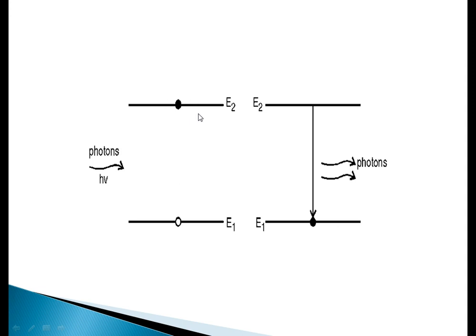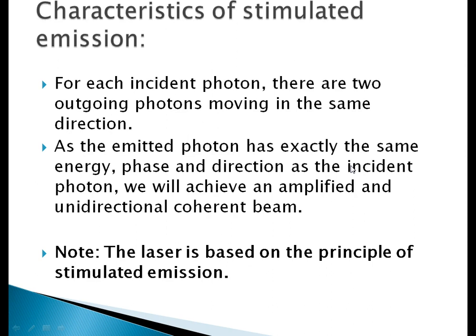As you can see in the diagram, a photon exactly equal to E2 minus E1 is incident on the system where an excited atom exists. This photon interacts with the excited atom, inducing it to de-excite to the ground state. The incident photon and the photon released during the transition from E2 to E1 both move in the same direction.